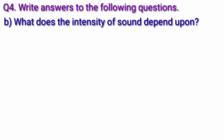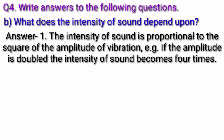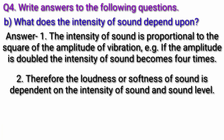Question B: What does the intensity of sound depend upon? Answer: The intensity of sound is proportional to the square of the amplitude of vibration. For example, if the amplitude is doubled, the intensity of sound becomes four times. Therefore, the loudness or softness of sound is dependent on the intensity of sound and sound level.